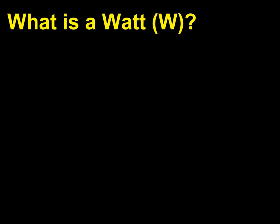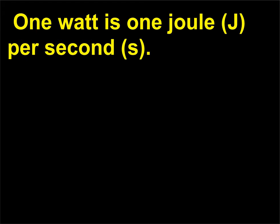What is a watt (W)? A watt is a unit of power. One watt is one joule (J) per second (s).